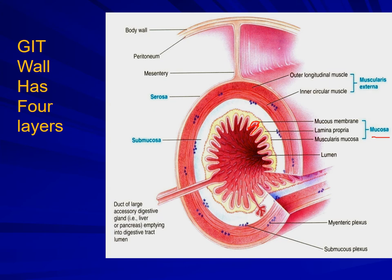In certain parts of the GIT it will be of squamous variety and in some other parts it might be of columnar variety depending upon what function is being performed by that specific segment. The second layer is lamina propria, which is composed of loose connective tissue and contains numerous glands, small blood vessels, lymphatics, and nerve fibers. The third layer, muscularis mucosa, is composed of two thin layers of smooth muscle fibers and helps in localized movements of the mucosa.